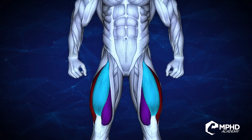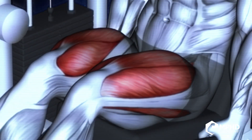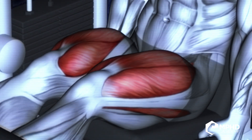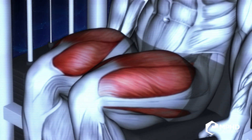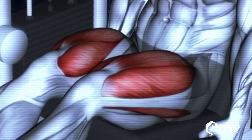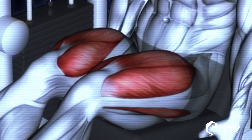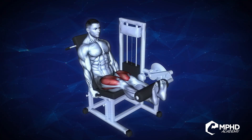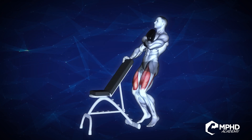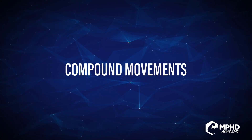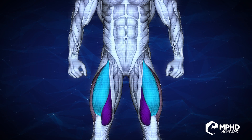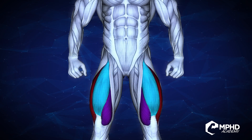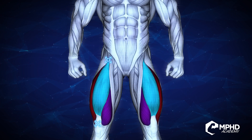Knee extension means straightening the lower leg, or extending it further away from the back of the thigh. Isolation exercises that include knee extension are your classic leg extensions as well as sissy squats. Knee extension also occurs in compound movements — where you work both the hip and the knee — such as squats and leg press.